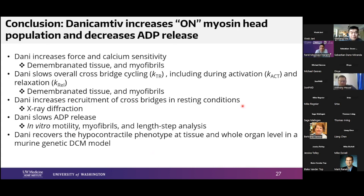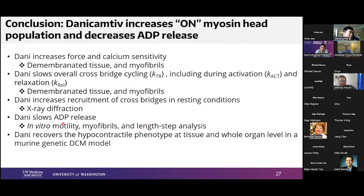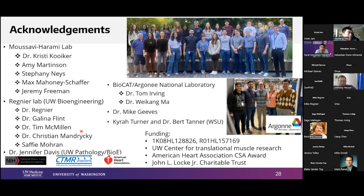In summary: Danicamptiv increases force and calcium sensitivity in demembranated tissue and myofibrils. It slows overall cross-bridge cycling including activation and relaxation. X-ray diffraction shows increased recruitment of cross-bridges at resting conditions. Using in vitro motility, myofibrils, and length-step analysis, Danicamptiv slows ADP release. We were also able to recover the hypocontractile phenotype at tissue and organ level in a mouse model of dilated cardiomyopathy.